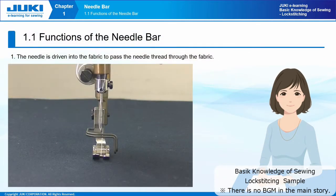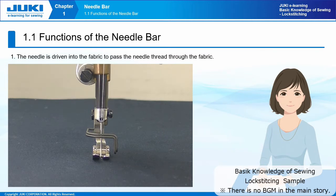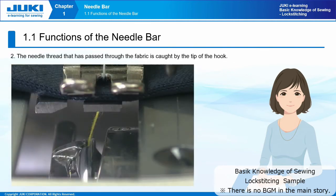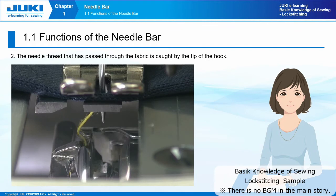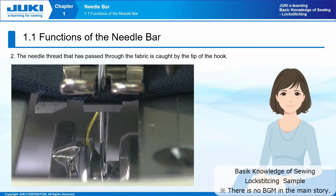Functions of the needle bar. The needle bar of a sewing machine has two primary functions. One is to drive the needle up and down to pierce the fabric with the needle. The other is to transfer the needle thread to the hook, so that the tip of the hook catches the needle thread after the thread is passed through the fabric.